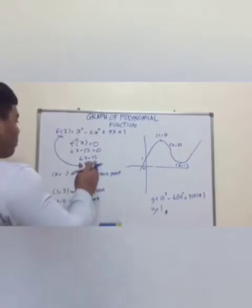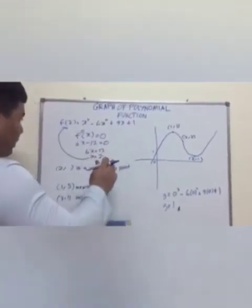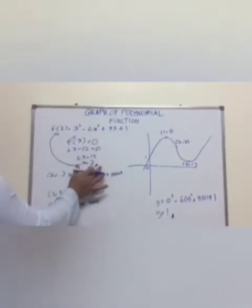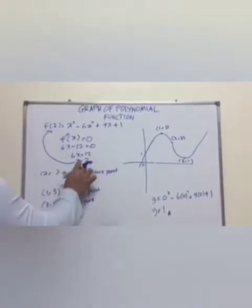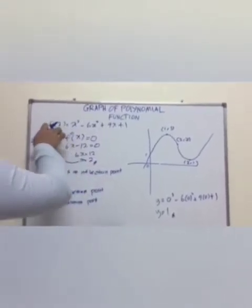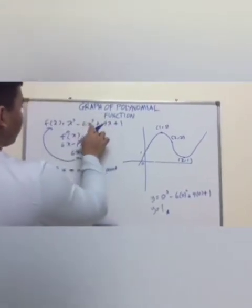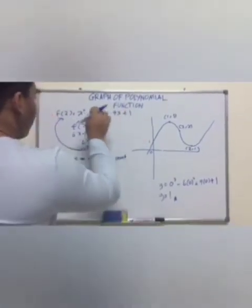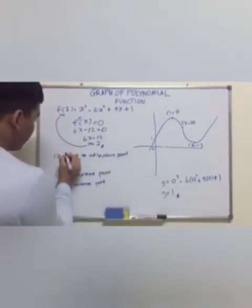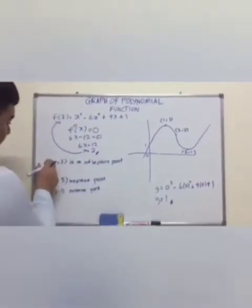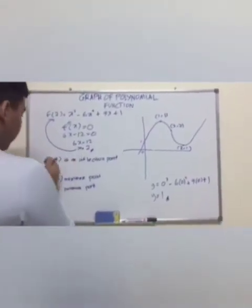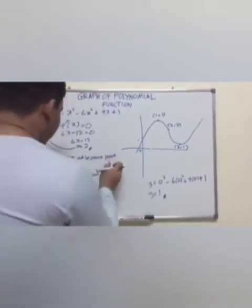So this solution is to find an inflection point. So what we have here for the solution is 2. So we must replace 2 for the first question. So 2 power by 3 minus 6 multiply 2 power by 2 plus 9 multiply 2 plus 1. So the answer for this, you can get 3. So (2, 3) is an inflection point.